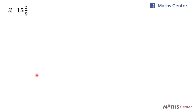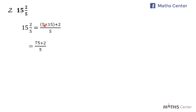Let's take the next example. We have 15 whole number 2 over 5. Once again, you multiply the denominator by the whole number part: 5 times 15. Then you add what you get to the numerator, so plus 2, then divide the whole thing by the denominator. 5 times 15 gives us 75. 75 plus 2 divided by 5. You know that 75 plus 2 is 77, then we divide that by 5, giving us 77 over 5.